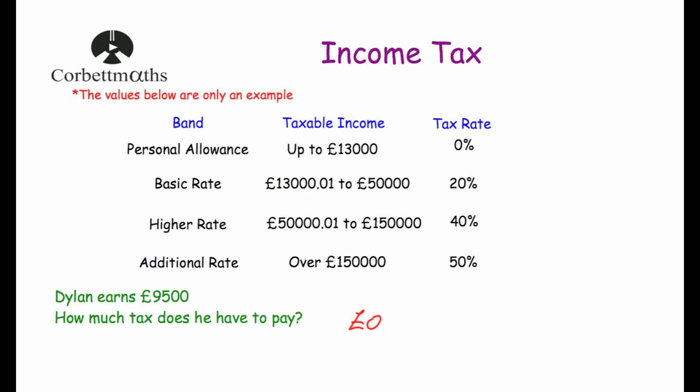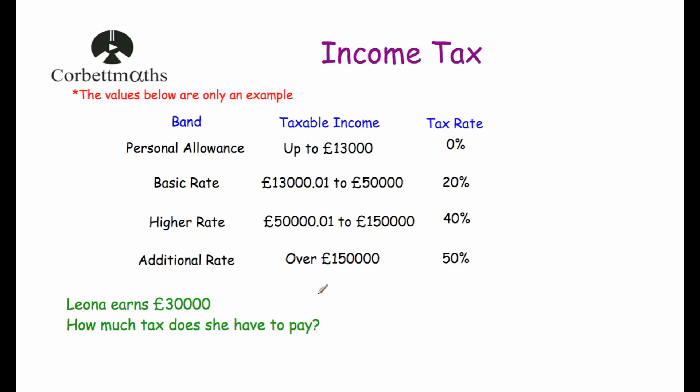Our next question: Leona earns £30,000 — how much income tax does she have to pay? Looking at our table, the first £13,000 has a tax rate of 0% — her personal allowance — so she pays no tax on the first £13,000. Then because she earns £30,000, the rest of her salary falls in the basic rate band between £13,000 and £50,000, where the tax rate is 20%.